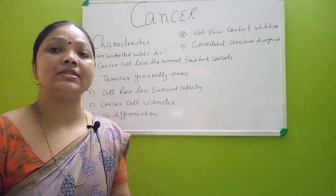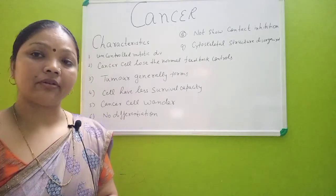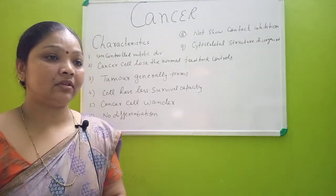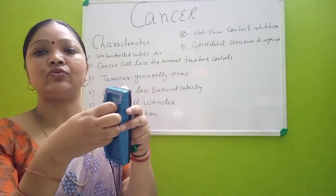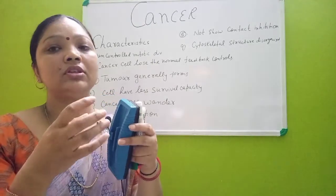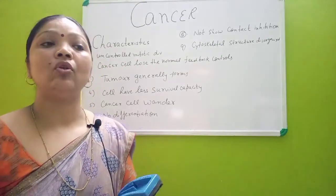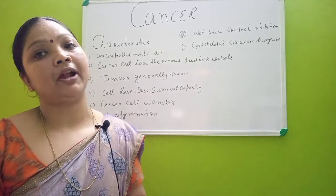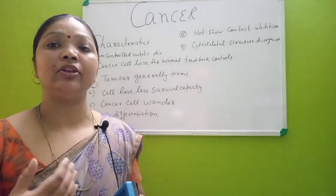The next characteristic is that cancerous cells have less survival capacity — their lifetime becomes shorter. Cancerous cells also become far less adhesive than normal cells. In normal cell division, cells grow and their walls stick to each other, maintaining adhesiveness. But since cancerous cell growth is not properly controlled and they grow in massive amounts, they become less adhesive and wander throughout the tissue, spreading cancer growth to different parts of the body.